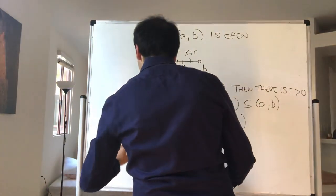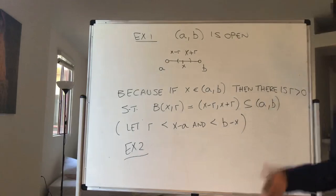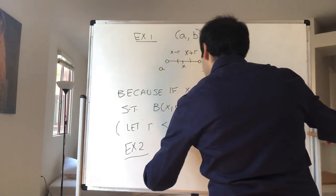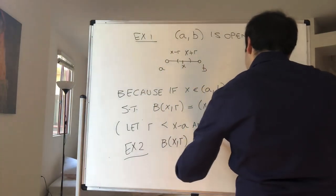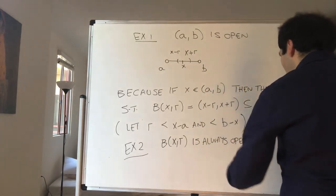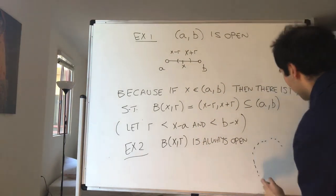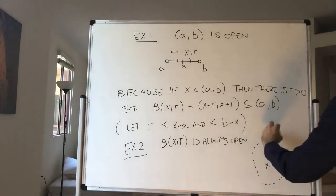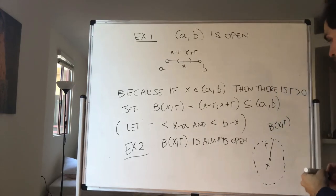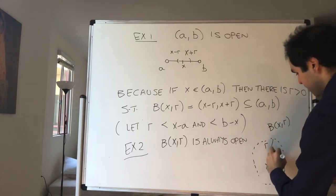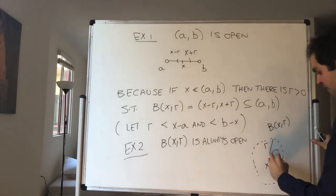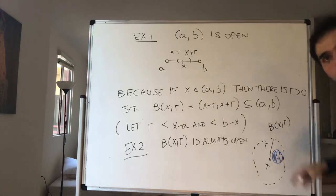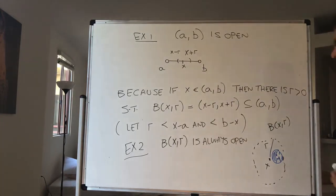Another example of open sets: the open ball itself is an open set. B(x, r) is always open. Consider this ball B(x, r). No matter which point y you pick in that ball, you can always fit a very small ball inside of it — you can still move around a little bit and still be in that ball.